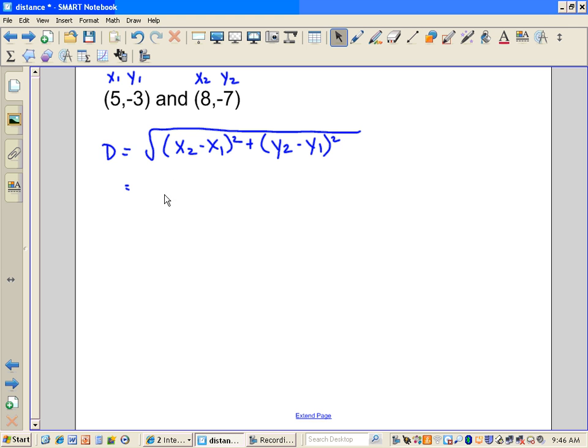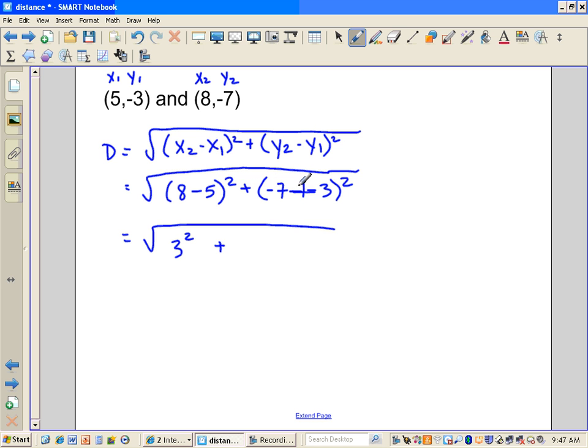Square root. Subtract my X's. 8 minus 5 squared. Plus negative 7 minus negative 3. Be very careful when you have negatives in your points, because when you're subtracting a negative, that has to become a positive. So, then we go like this. 8 minus 5 is 3 squared. And then we're going to square it. Negative 7 plus 3 becomes negative 4 squared.